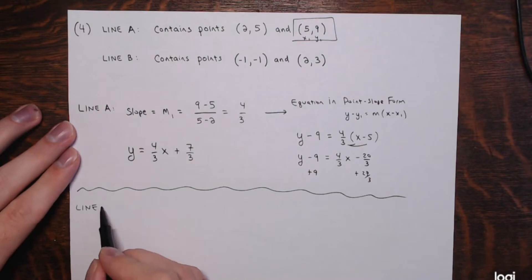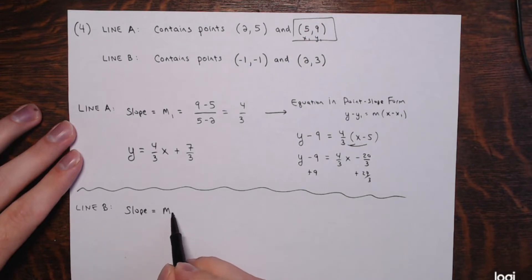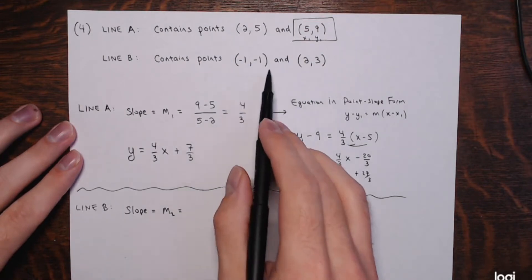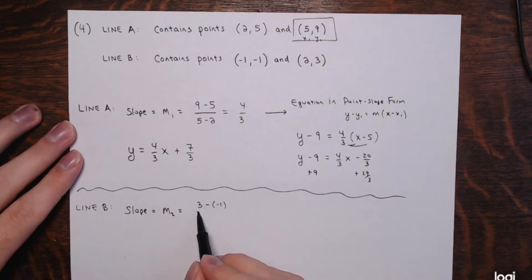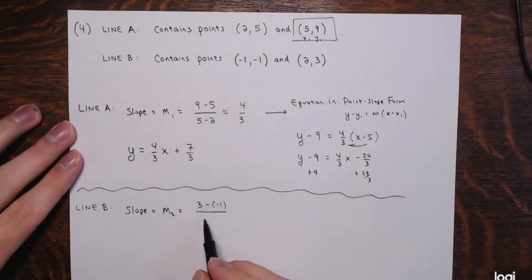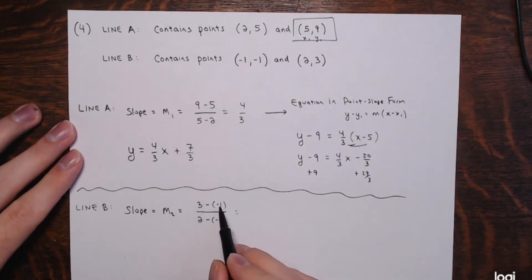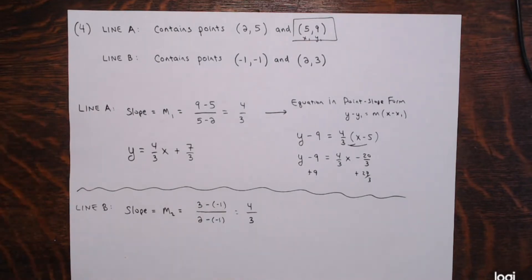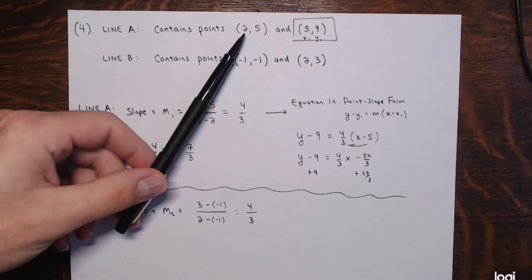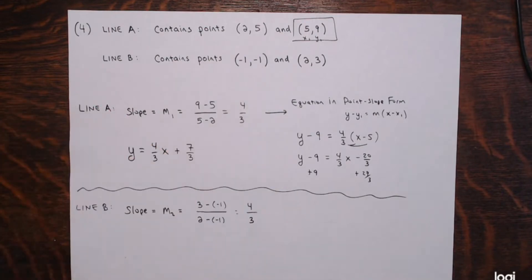Now for line B. I'll call its slope m2. Line B has the points (negative 1, negative 1) and (2, 3). Change in y: 3 minus negative 1 is 4. Change in x: 2 minus negative 1 is 3. So m2 is also 4/3 — they have the same slope. And since line A has the point (2, 5) while line B has (2, 3), they have different y-values at the same x, so they'll have different intercepts. These are going to be parallel.